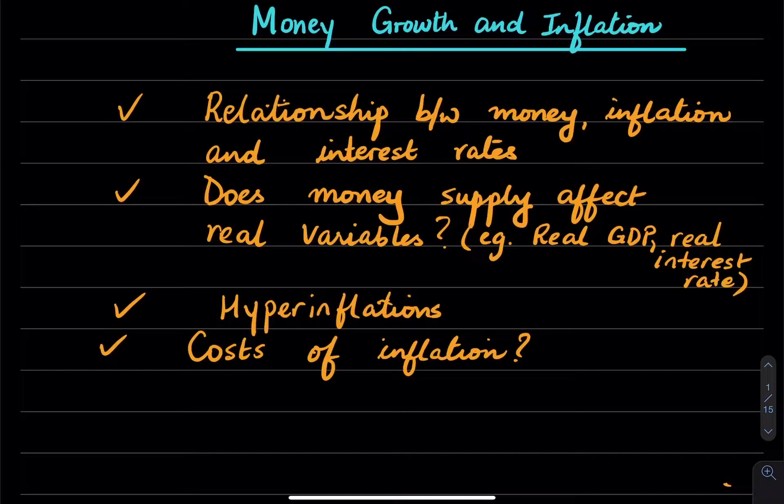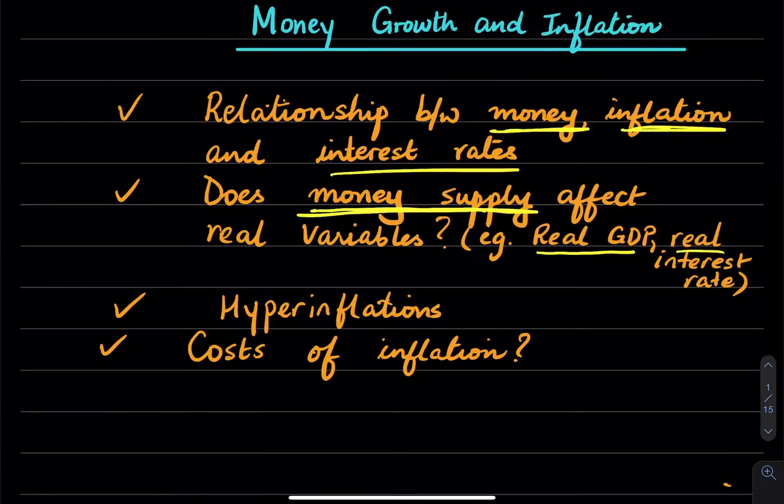In this chapter, we're going to be talking about money growth and inflation. We'll talk about the relationship between money, inflation, and interest rates. We will also talk about how money supply affects real variables like real GDP and real interest rates - variables that are corrected for inflation. And we want to understand, does any change in money supply affect those variables?